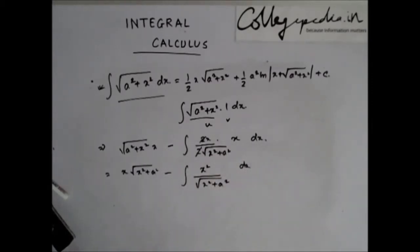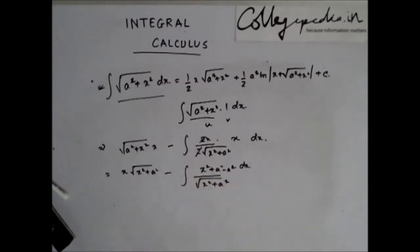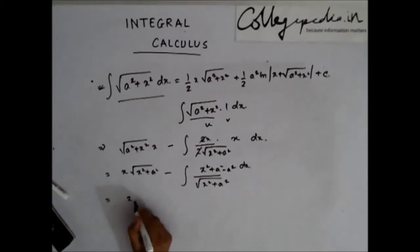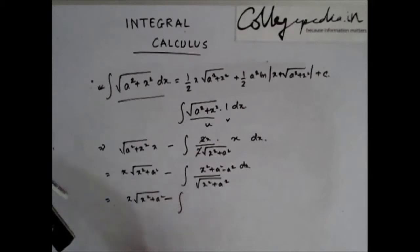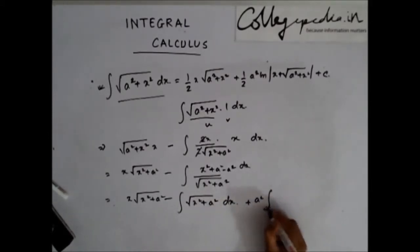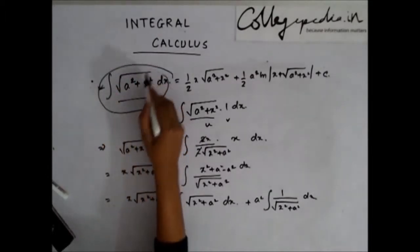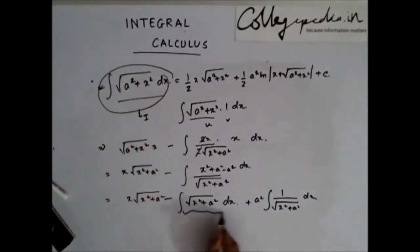To simplify, let's add and subtract a² in the numerator. This gives us: x·√(a²+x²) minus the integral of (x²+a²-a²)/√(x²+a²) dx, which splits into minus the integral of √(x²+a²) dx plus a² times the integral of 1/√(x²+a²) dx. If we denote the original integral as i, this also contains i on the right side.